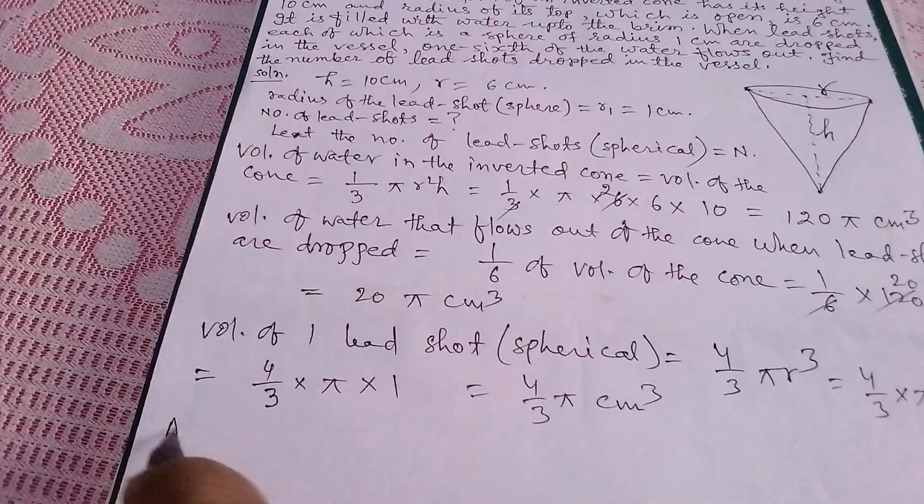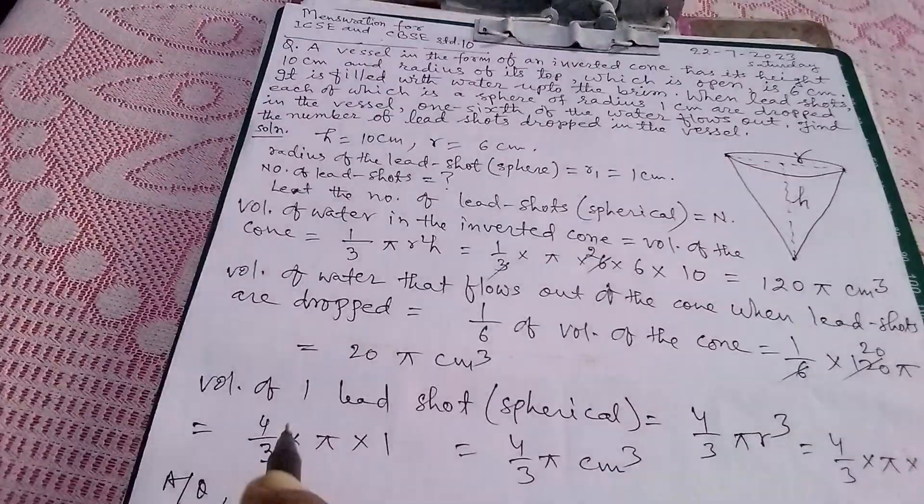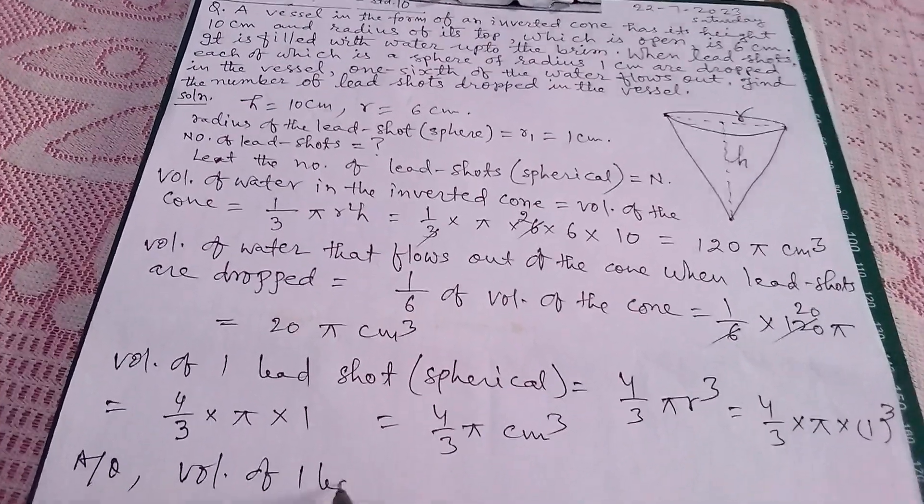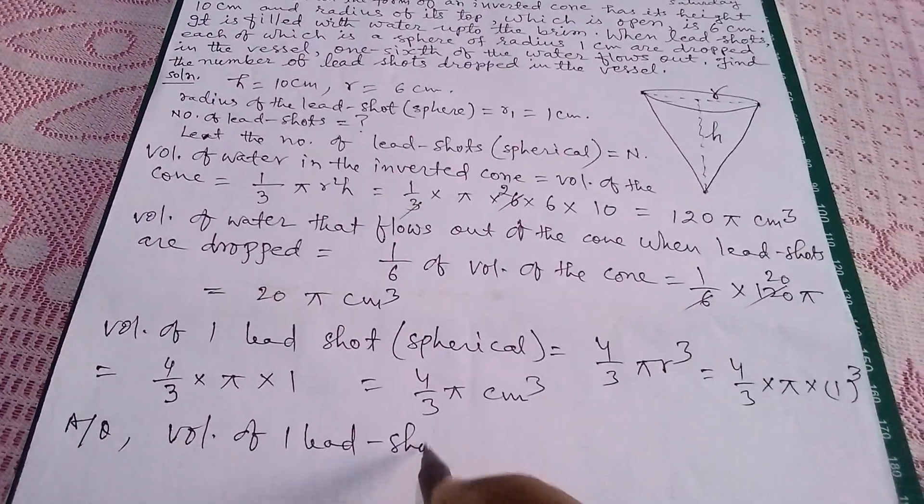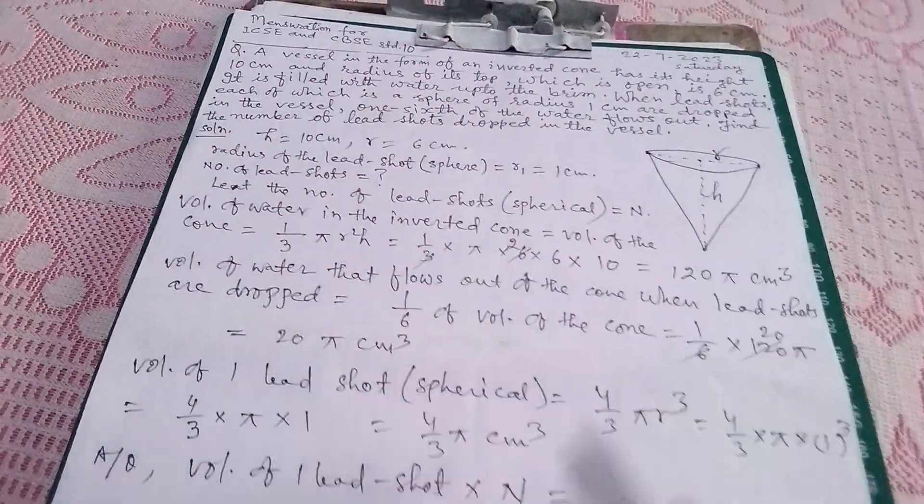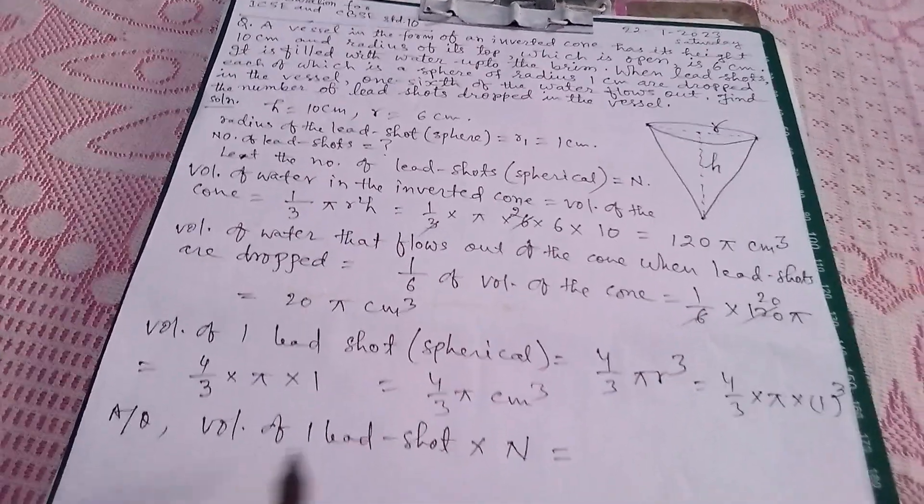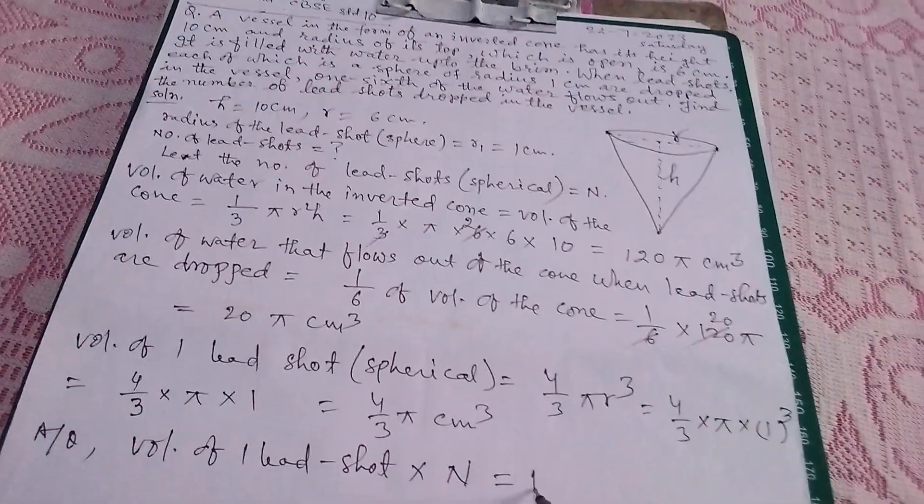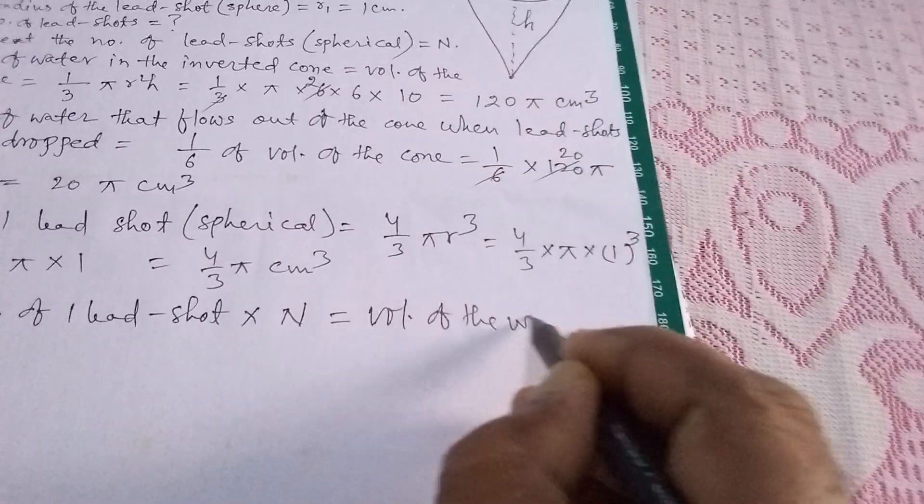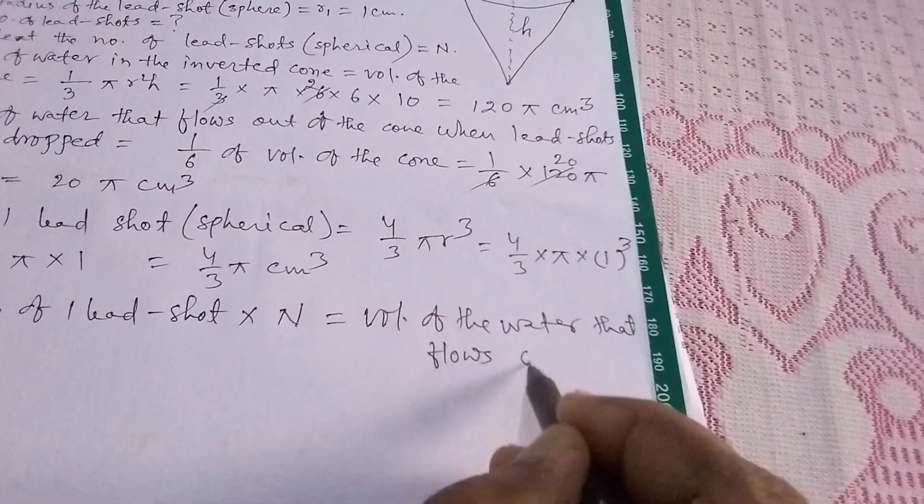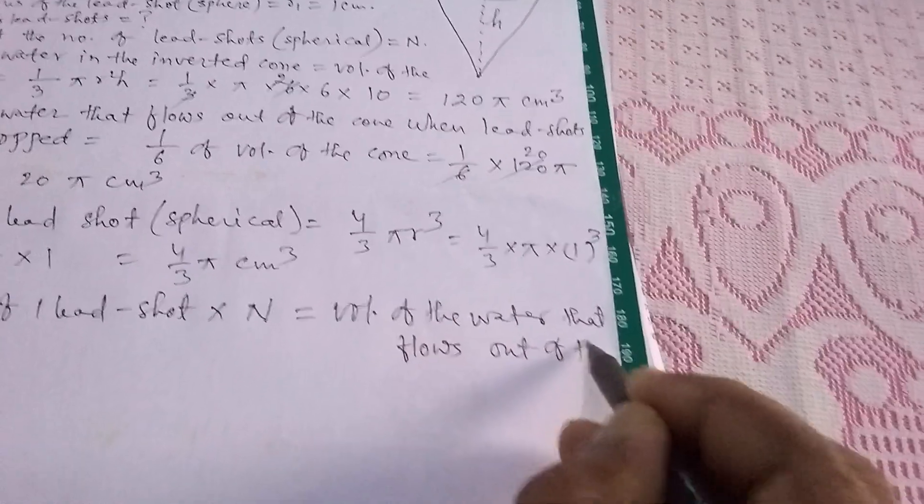Now, according to question, volume of one lead shot into N, that means number of lead shots, if that is multiplied by volume of one lead shot, that will be equals to volume of the water that flows out of the cone. That both will be equal.